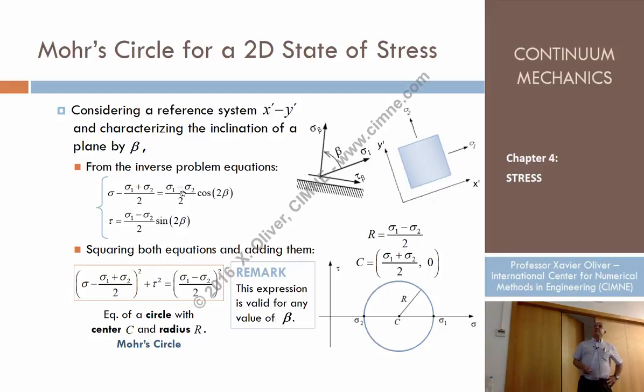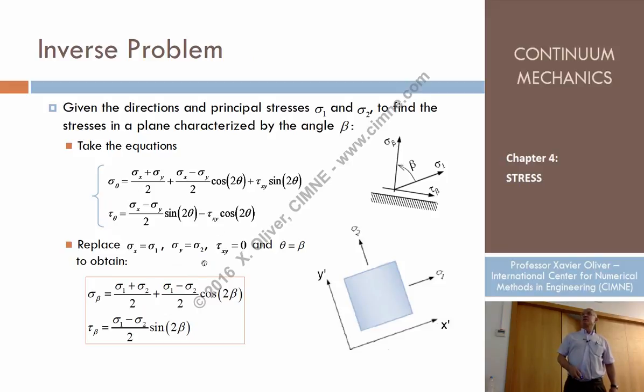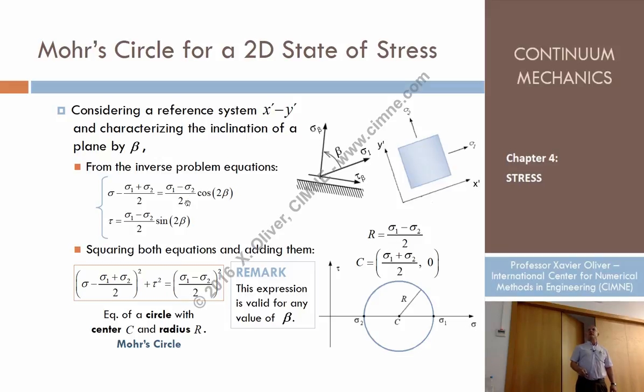Using these formulas in terms of this angle I could define what are sigma beta and tau beta for any beta. So for any normal direction of the plane, for all planes in every direction. They would be provided by the former equations, which now can be rewritten just passing that for the other side in that way.